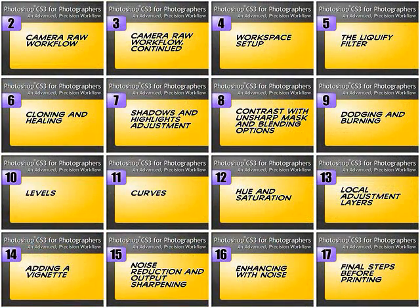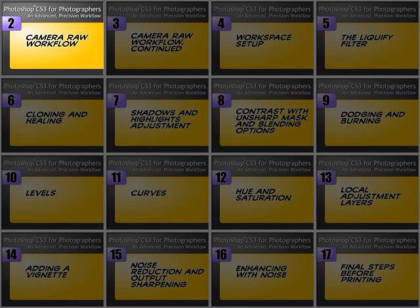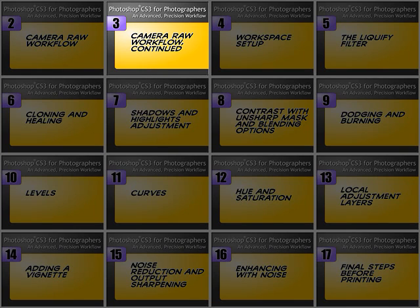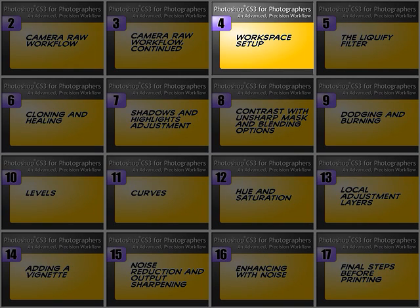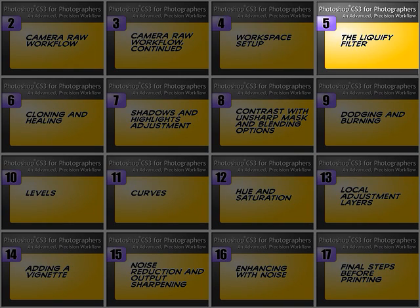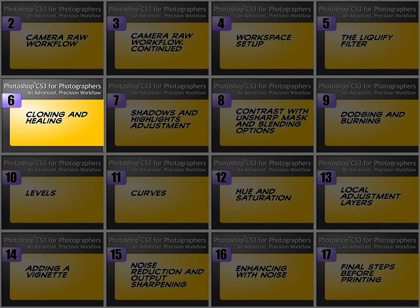There's a total of 16 lessons here, and here's how they're broken down. First, we open an image in Camera Raw and reset the defaults. Then we develop our image and open it up in Photoshop. The first thing we'll do in Photoshop is to configure the workspace. Then begins the actual retouching — we start with the liquify filter. Next we'll clone and heal.